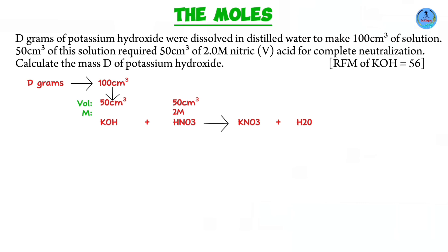What is our first step going to be? Writing a balanced chemical equation. It's already balanced, and as you can clearly see we have a mole ratio of 1 to 1. One mole of potassium hydroxide reacts with one mole of nitric acid. So whatever number of moles we find for nitric acid, the moles of potassium hydroxide are going to be the same.